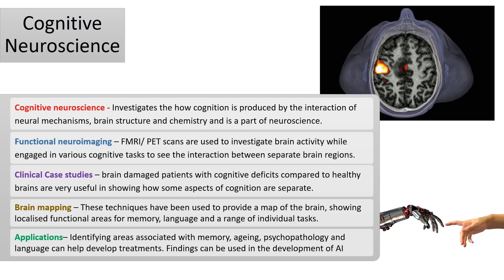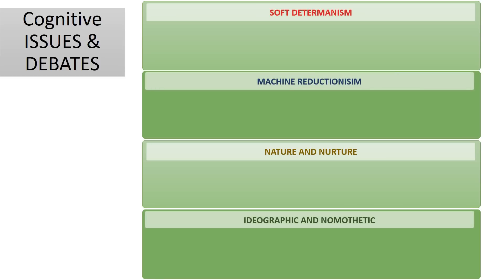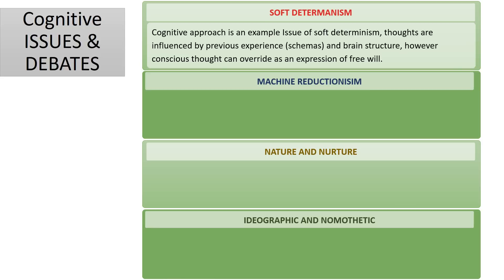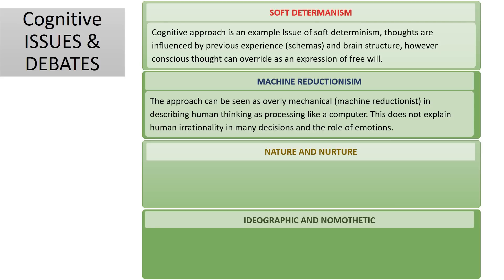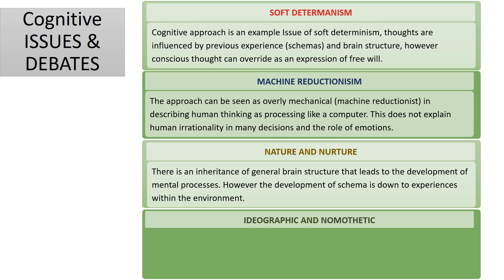Looking at how cognitive psychology links up with issues and debates: cognitive psychology is a soft determinist approach. It suggests that even though thoughts are influenced by previous experience — schemas and brain structure — we do have conscious thought, and these conscious thoughts can override those influences. The comparison of the brain to a computer is criticised as being overly mechanical, or machine reductionist, reducing humans to the level of machines. In the nature-nurture debate, cognitive psychologists accept that brain structure is inherited and leads to shared mental processes, but schema development is down to experience within the environment, so there is a balance between nature and nurture.